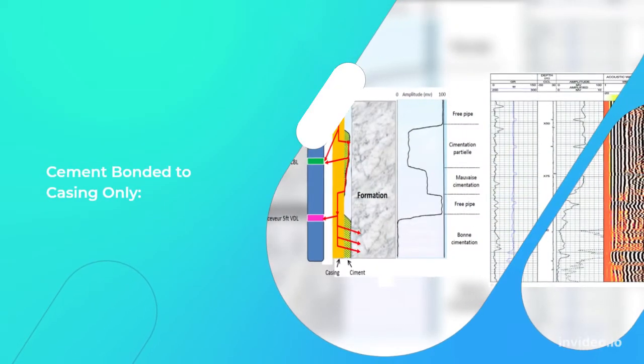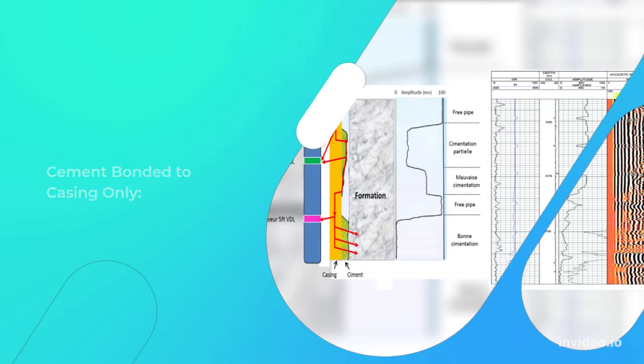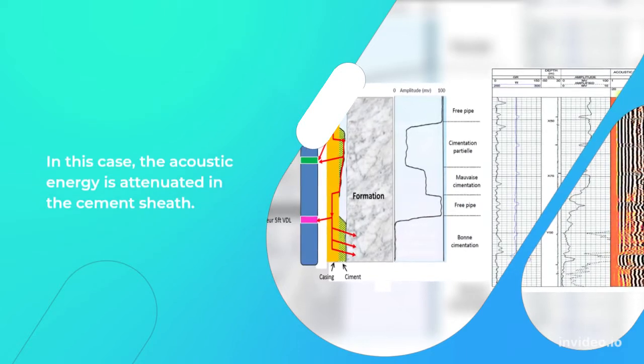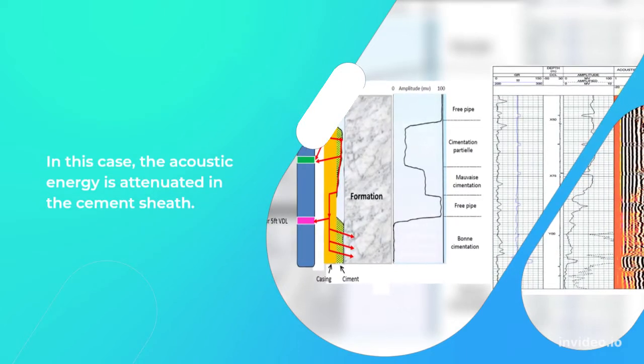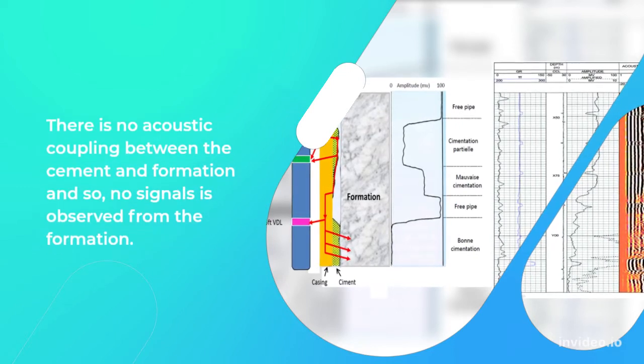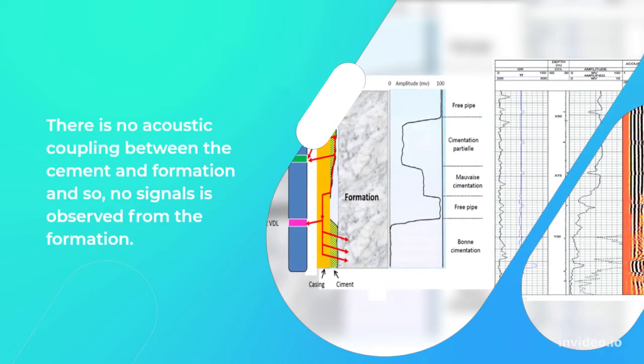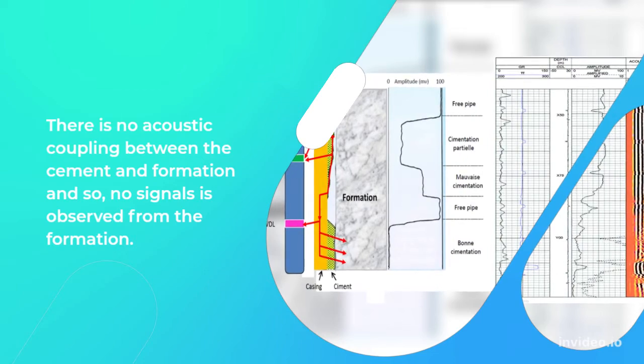Cement bonded to casing only: In this case, the acoustic energy is attenuated in the cement sheath. There is no acoustic coupling between the cement and formation, and so no signal is observed from the formation.